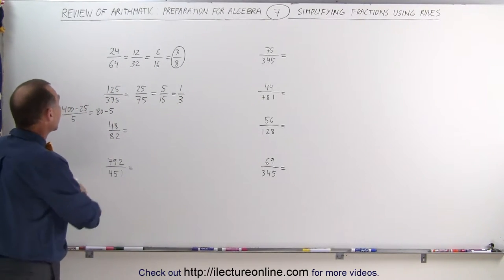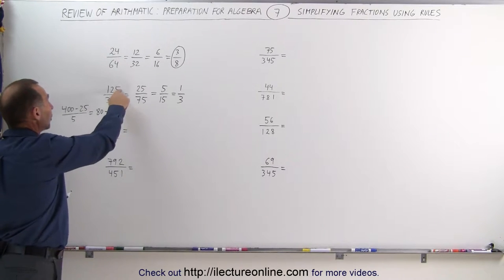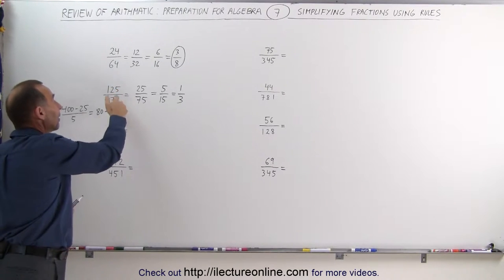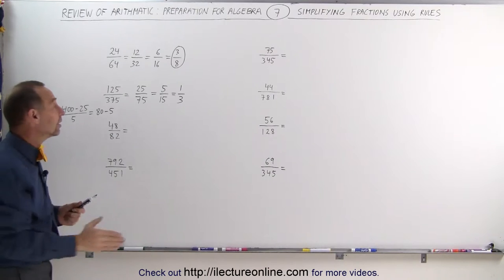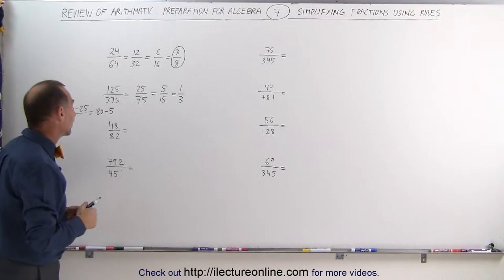Now, sometimes you can look at this and realize, wow, if I multiply this by 3, I get 375, so it's 1 third. But if you don't see that, you can simply simplify it like that.